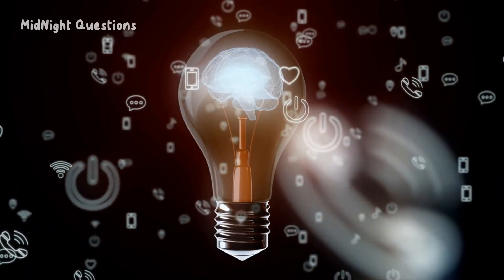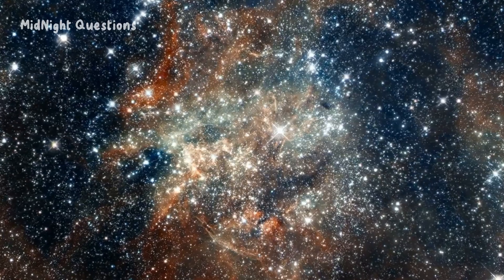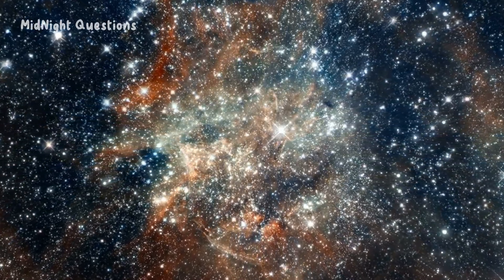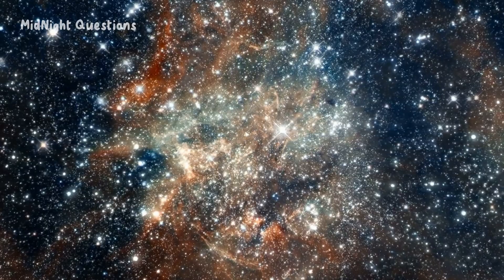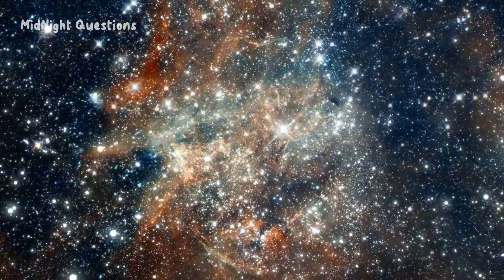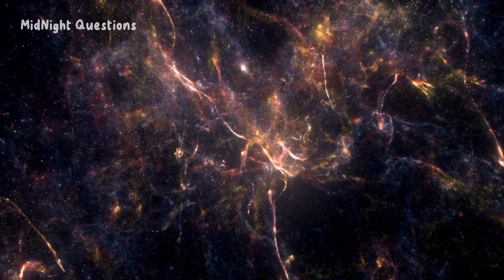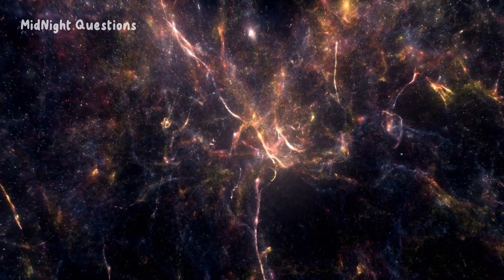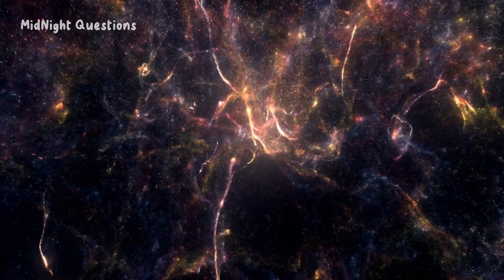Finally, consider the concept of the observable universe. The observable universe is the portion of the universe that we can see, given the current age of the universe and the speed of light. It is estimated to be around 93 billion light-years in diameter, but it is likely that the entire universe is much larger than that.